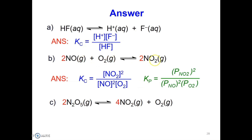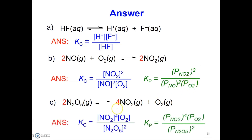Since the reactant and product species are also in the gas phase, this reaction also has a Kp expression: partial pressure of NO2 to the power of 2, over partial pressure of NO to the power of 2 times partial pressure of O2. For (c): the Kc expression is concentration of NO2 to the power of 4 over concentration of N2 to the power of 2, and the Kp expression is partial pressure of NO2 to the power of 4 times partial pressure of H2O to the power of 1, over partial pressure of N2 to the power of 2.